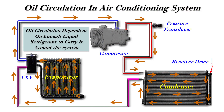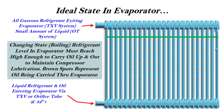Here is how a refrigerant undercharge can result in catastrophic compressor failure. PAG oil does not dissolve in R134a refrigerant — it simply mixes with it. Oil circulation in the system is dependent on the presence of enough liquid refrigerant to carry the oil around. This is especially important in the evaporator, where the refrigerant enters the bottom as a liquid and exits the top as a gas. It is essential that the liquid refrigerant level in the evaporator remains high enough to ensure that oil is carried up and out of the evaporator and returns to the compressor.